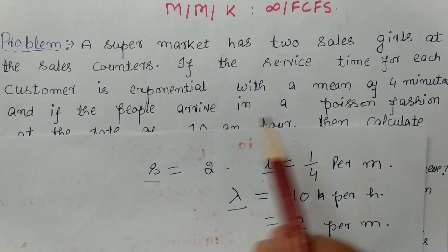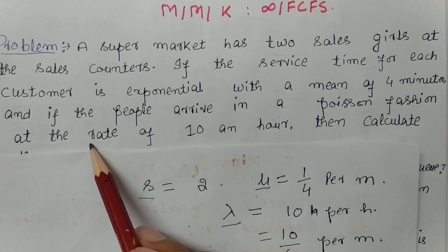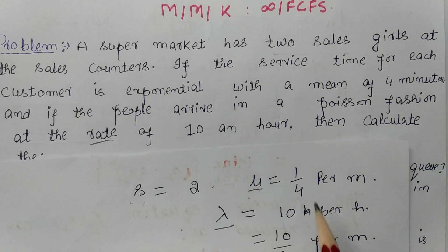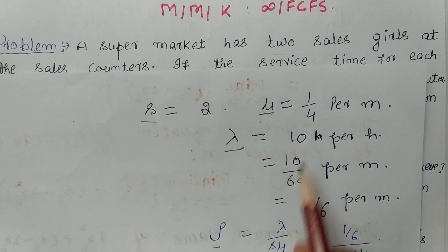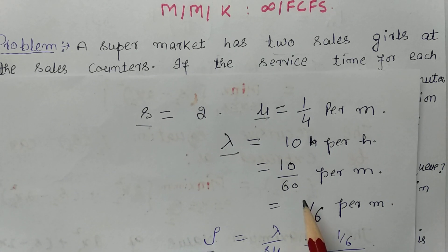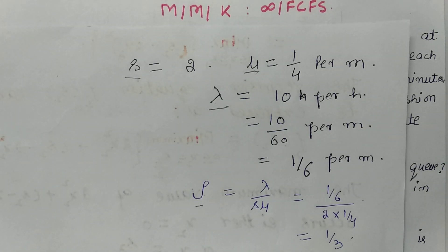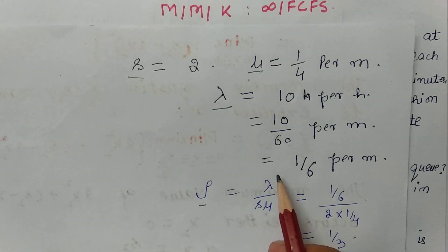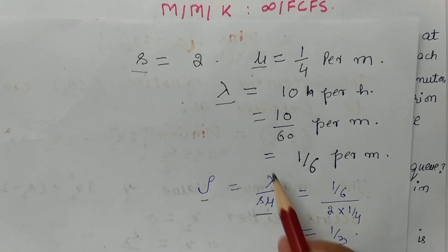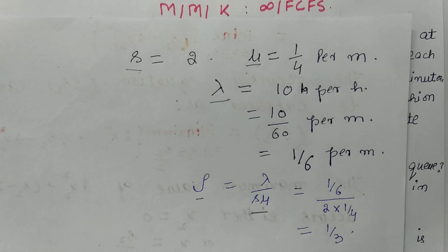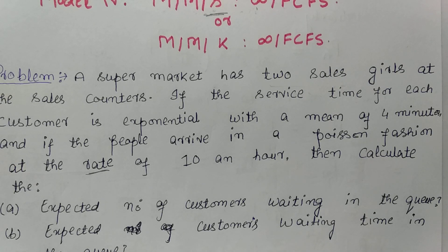Customers arrive in a Poisson fashion at the rate of 10 per hour, so λ equals 10 per hour. Converting to per minute: λ equals 10/60 equals 1/6 per minute. Now I will find ρ: ρ equals λ/(sμ) equals (1/6) / (2 × 1/4) equals 1/3.